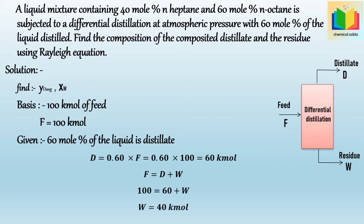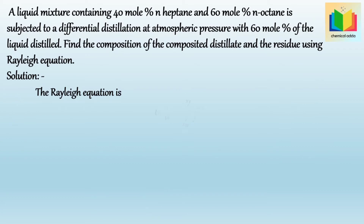Now let's put the values of F and W into the Rayleigh equation. The Rayleigh equation is: ln(F/W) = integral from X_W to X_F of [1/(Y - X)] dX. Substituting values, ln(100/40) = integral from X_W to X_F of [1/(Y - X)] dX.